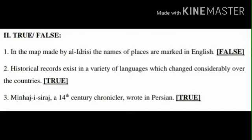Second section: true or false. Question number 1: In the map made by Al-Idrisi, the names of places are marked in English. Answer is false. Question number 2: Historical records exist in a variety of languages, which changed considerably over the centuries. The answer is true.